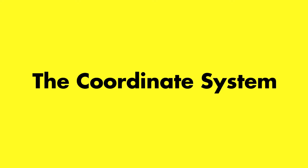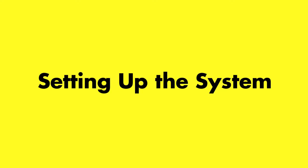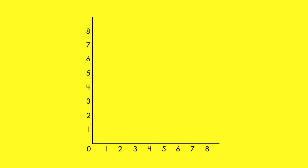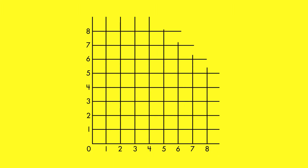The Coordinate System. A coordinate system is set up using a pair of perpendicular number lines called axes and a grid called a coordinate plane.